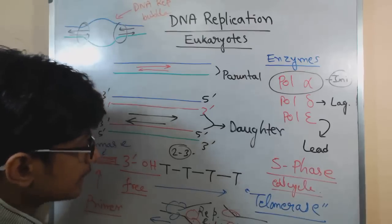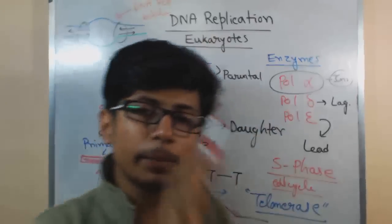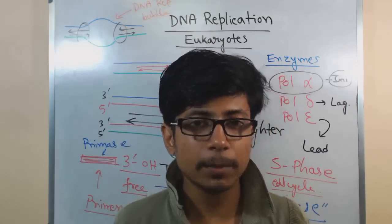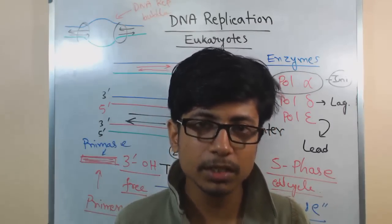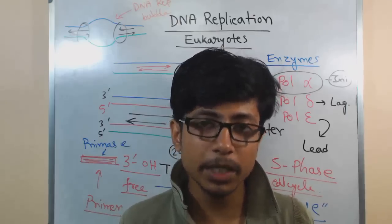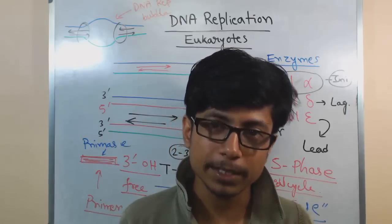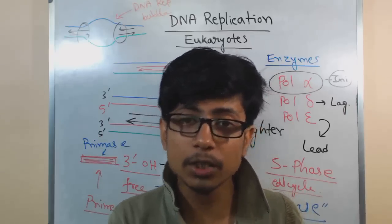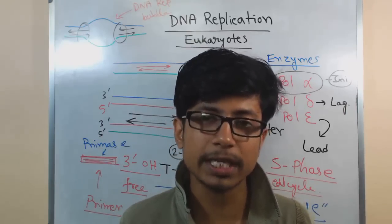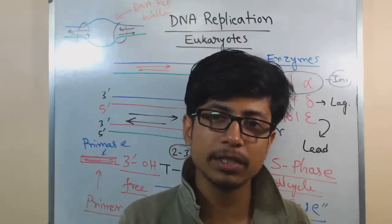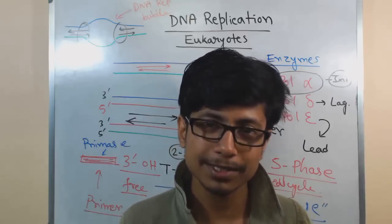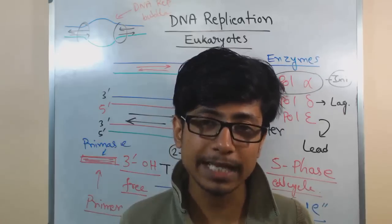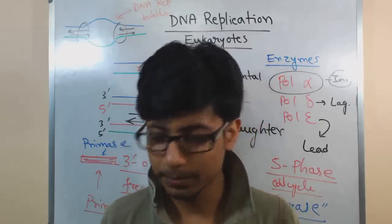That is the overview of DNA replication in eukaryotes. From the next video, we will be talking about the initiation, elongation, and termination of eukaryotic DNA replication. Hope this video helps you — please watch all the videos in the series to understand properly how eukaryotic DNA replication occurs. Thank you, like the video, subscribe to my channel to get more videos like this. All the best, thank you.